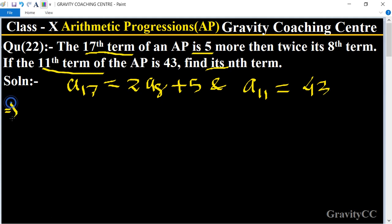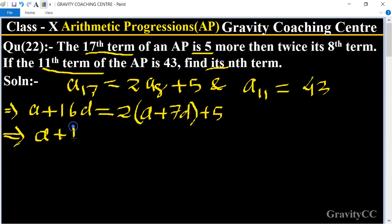This implies that a17, which is a + 16d, equals 2 times a8, which is a + 7d, plus 5. This gives us a + 16d = 2a + 14d + 5.